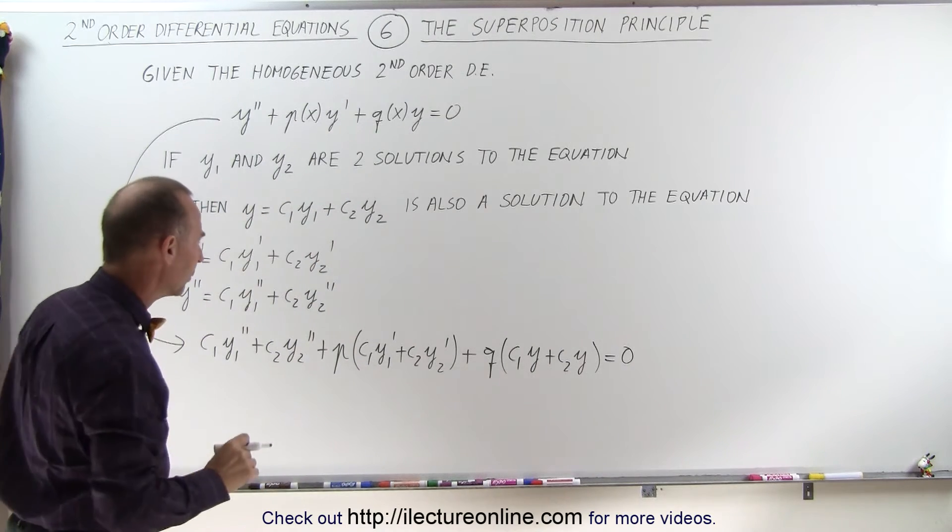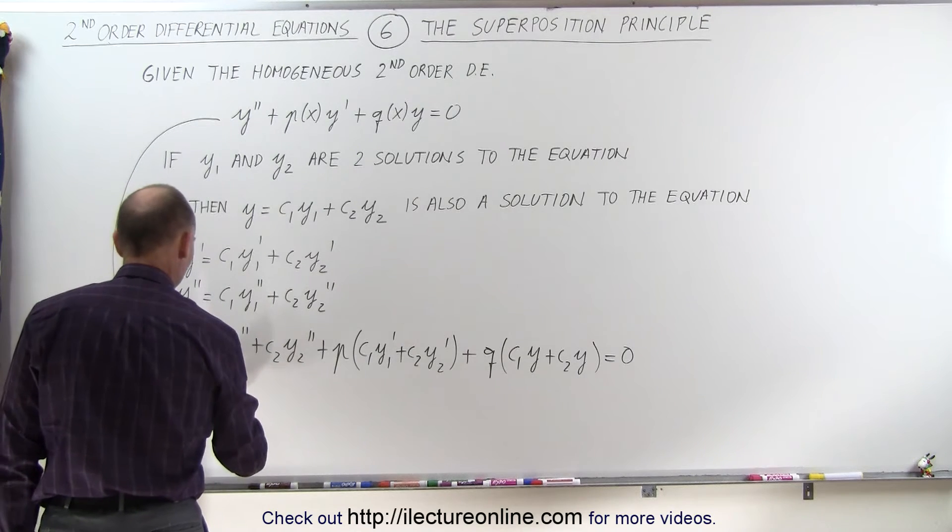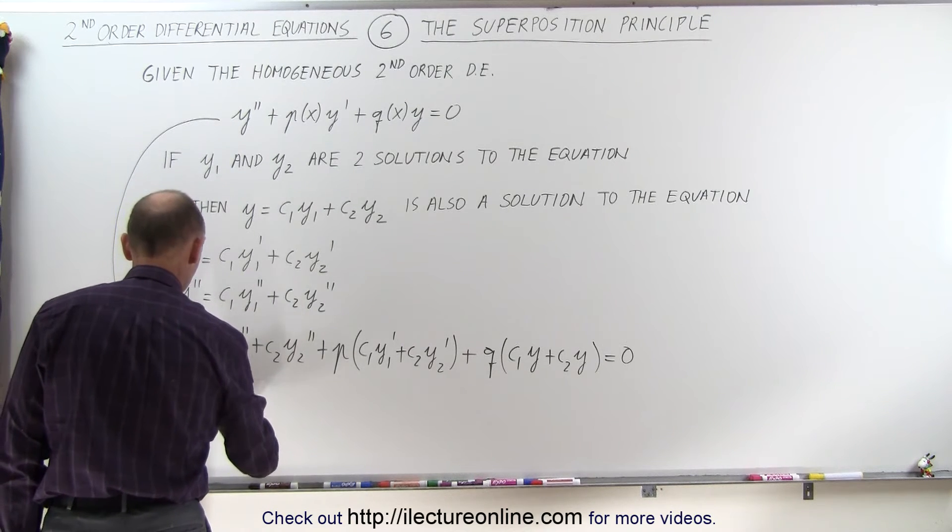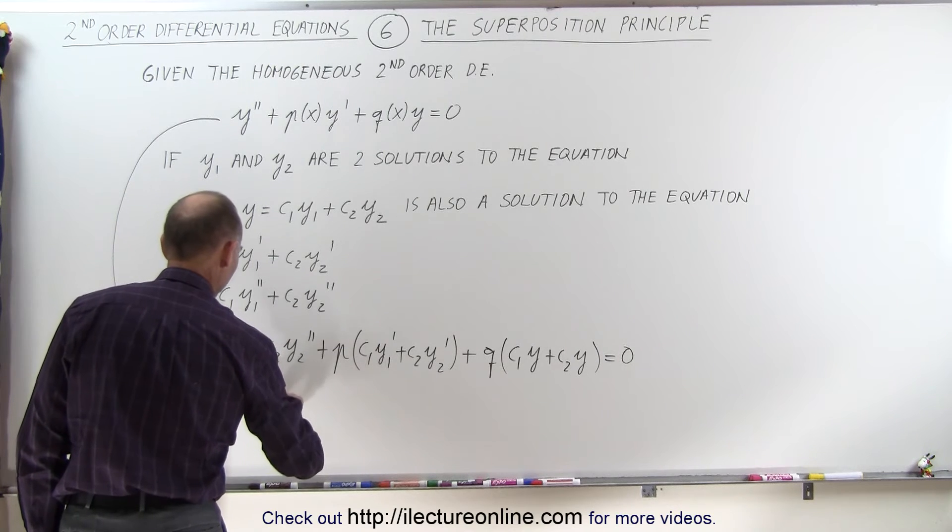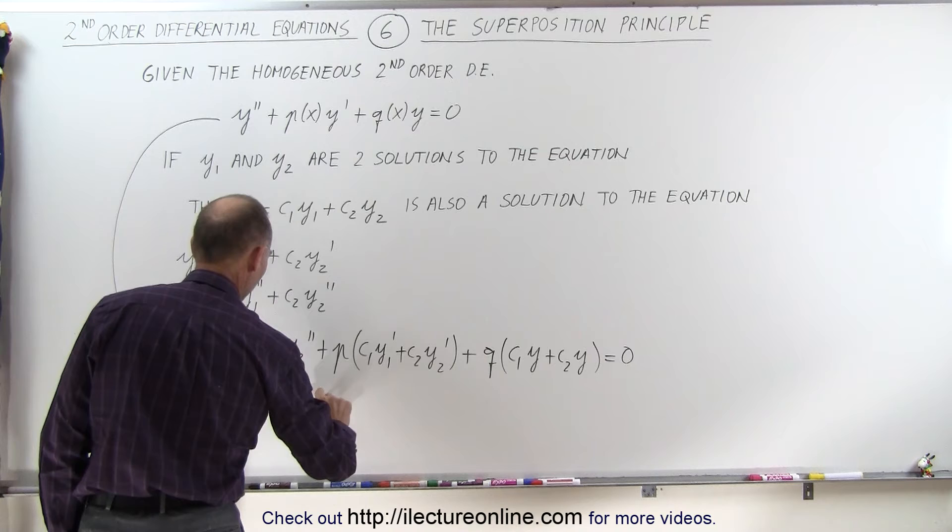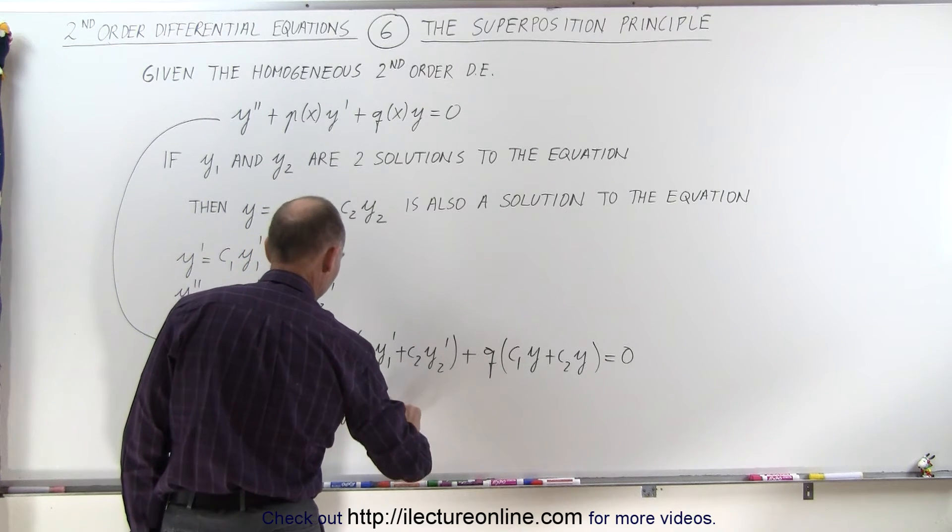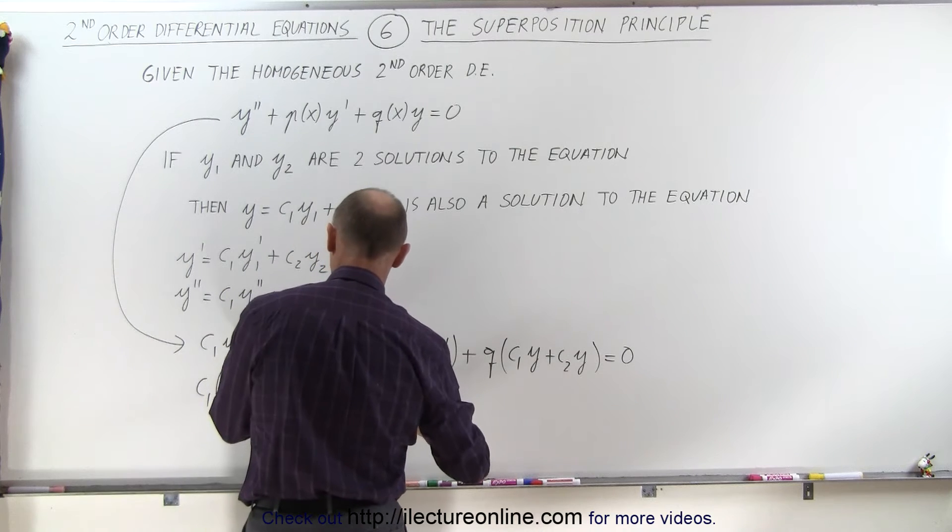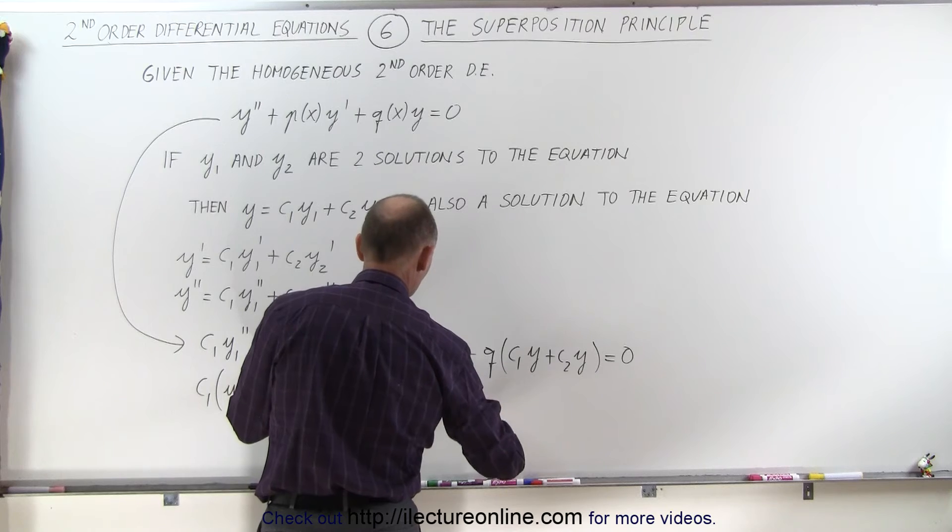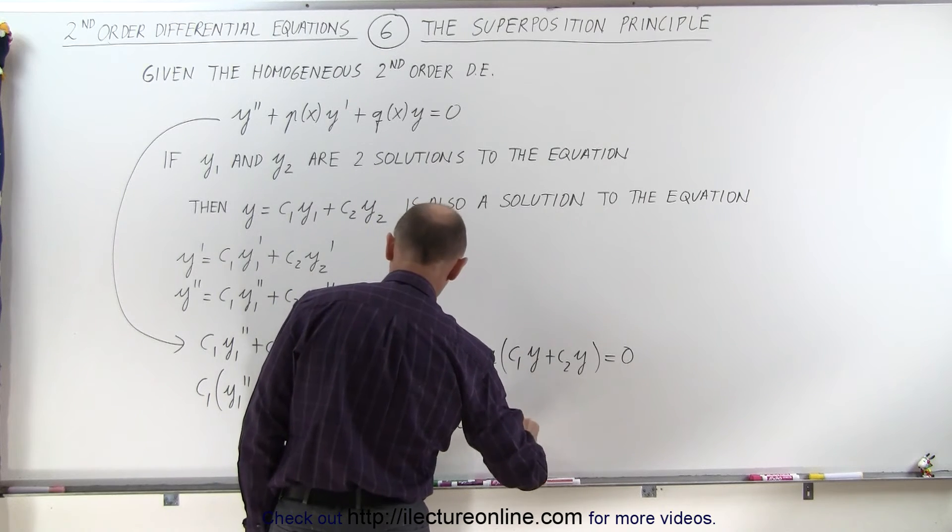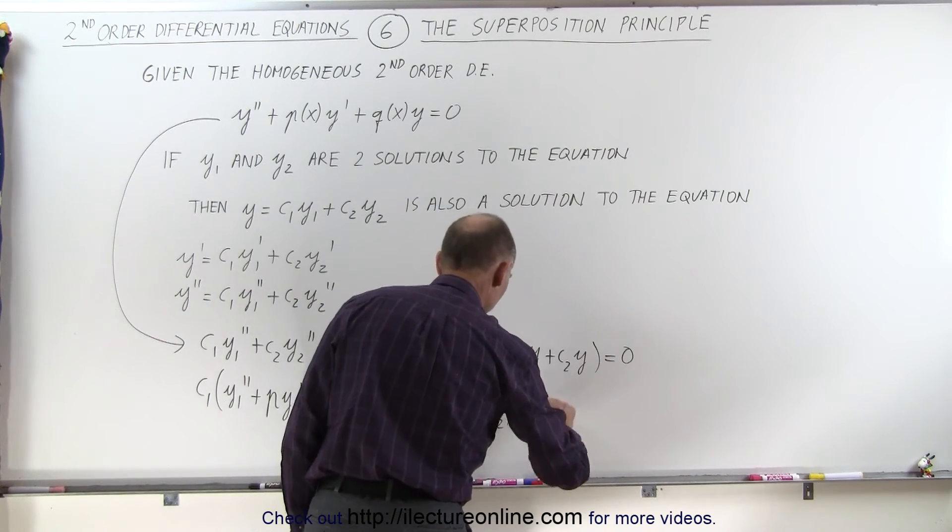So what we're going to do now is we're going to separate the y1s and the y2s. So we can write this as c1 times y1 double prime plus p y1 prime plus q y plus c2 times y2 double prime plus y2 prime plus y2, and this should be y1 here if we got to subscript 1. And that should then equal zero.